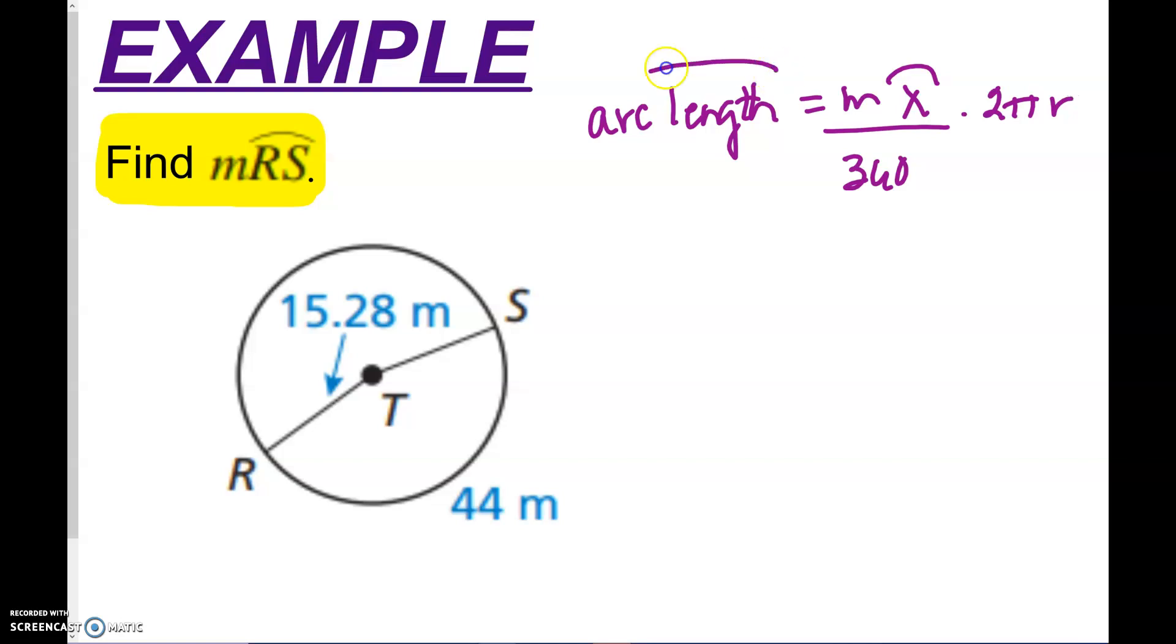So this arc length is not what we're looking for. We actually already know that. We know that that arc length right there is 44. What we don't know is what the measure of that arc is. So I don't know what the measure of that is. That's why I called that x. And I'm going to leave my 360 because it's 360 degrees around no matter what.